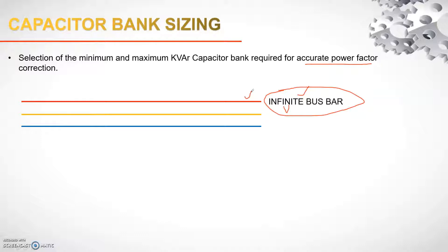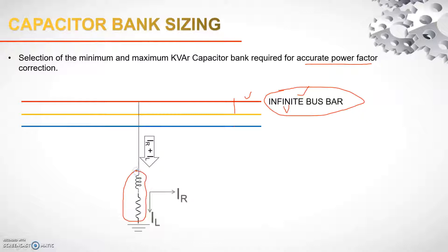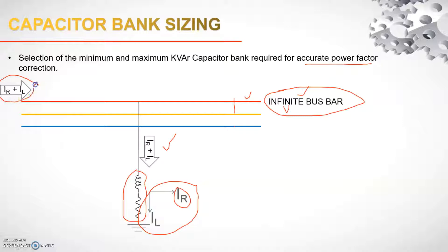In layman terms, the infinite bus bar is basically the bus bar of the grid. This is my R, Y, and B bus. Since I am in the industry, I have a connected load. Loads are generally inductive and resistive in nature. This load will be drawing a current of IR + jIL, where jIL is the reactive component of current lagging the voltage by 90 degrees, and IR is the resistive component.